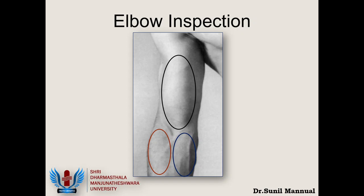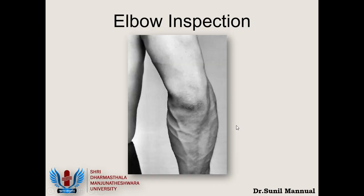Whether it is an inflammatory effusion, soft tissue effusion, or hemarthrosis is secondary — the first thing I know is that this elbow has a swelling. The same thing happens posteriorly — you have the projection of the olecranon with nice wrinkled skin. You also have the triceps, the mobile wad on the lateral side, and the flexor muscles on the medial side. On either side of the olecranon you have the paratricipital depressions or paratricipital grooves, which get filled up when there is an elbow effusion.